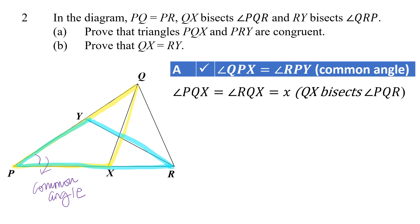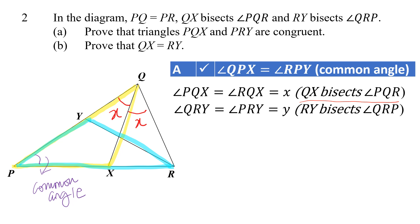We're going to let angle PQX equals angle RQX equals X. We can do that because we're told that line QX bisects angle PQR. Likewise, since RY bisects angle QRP, we can also let angle QRY equals angle PRY equals Y — same reasoning as above.